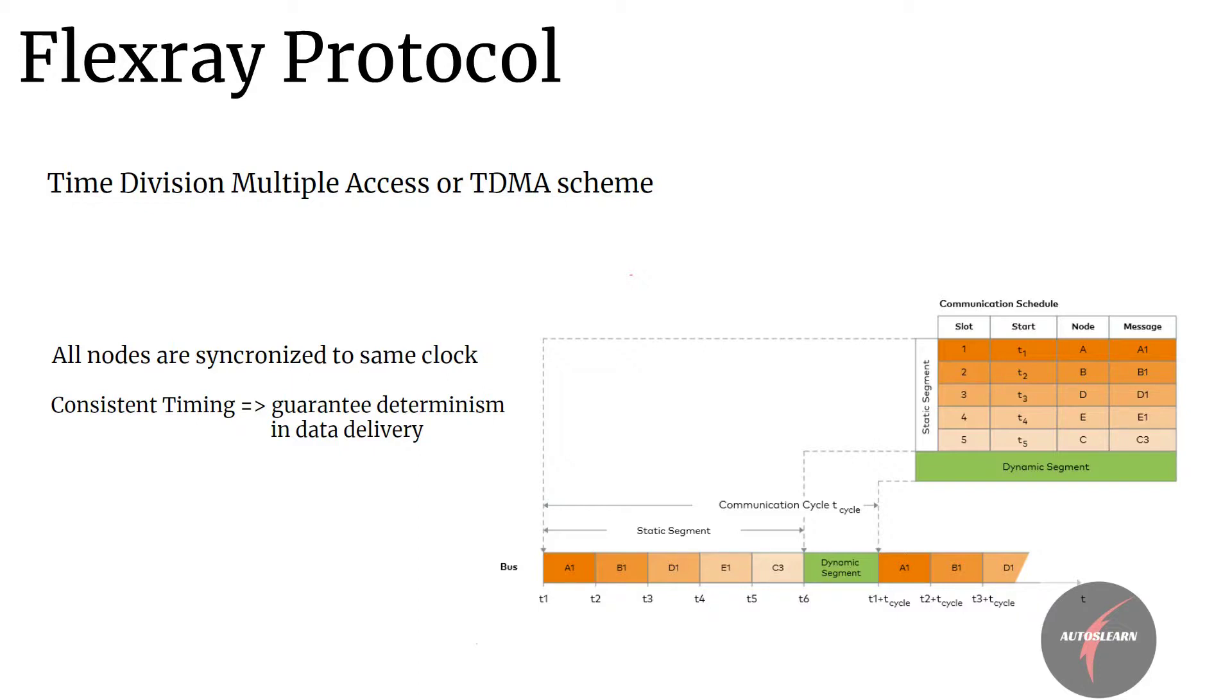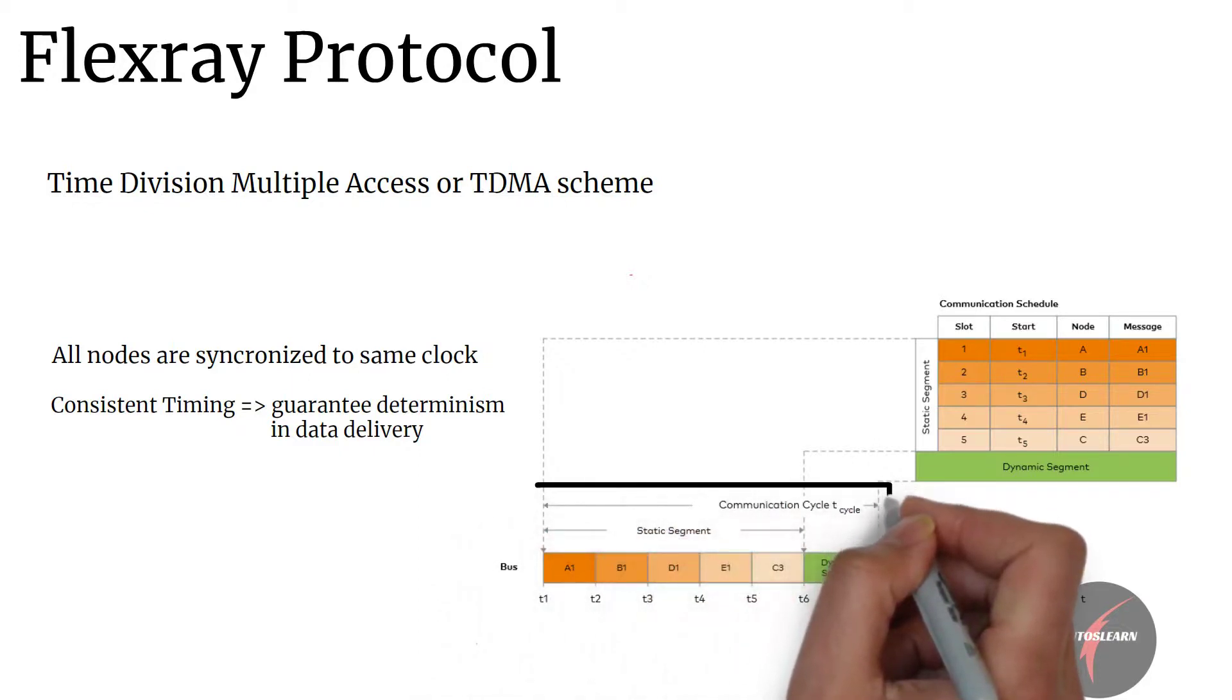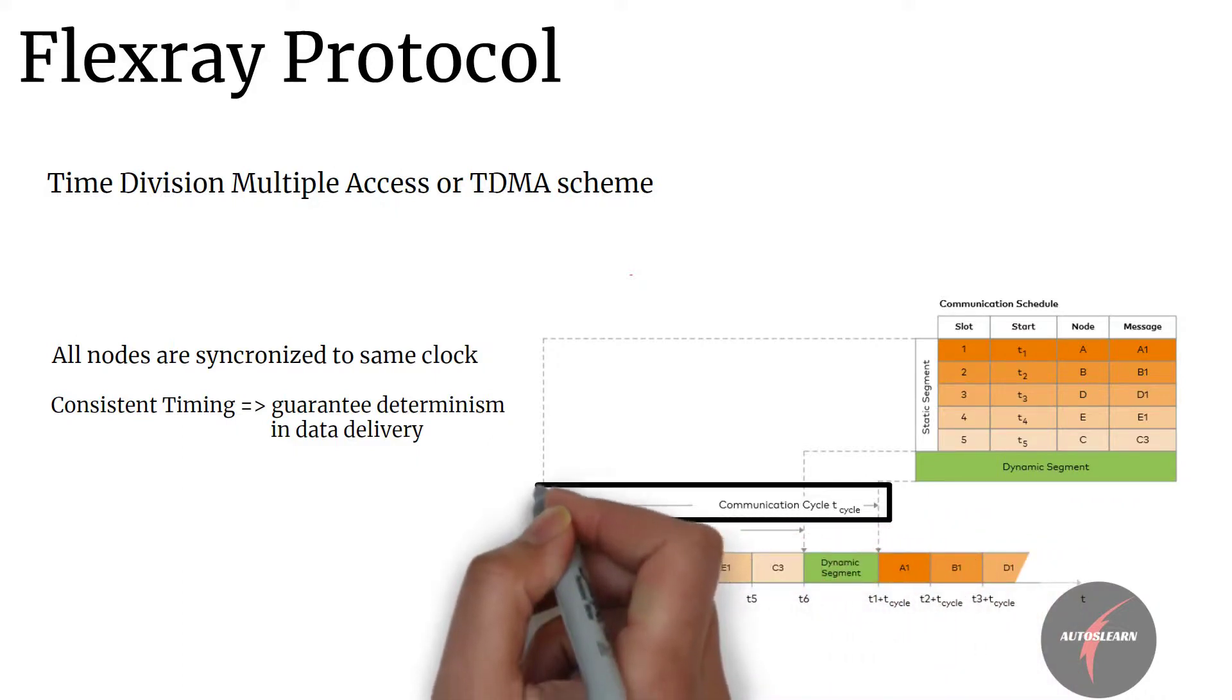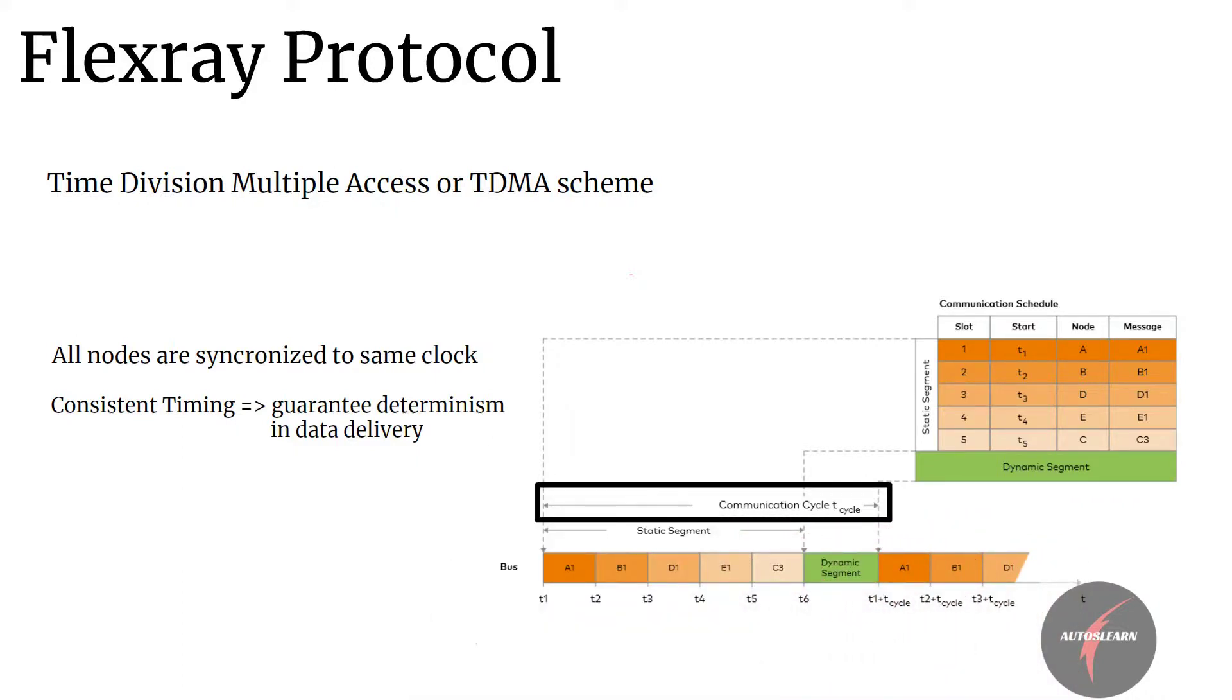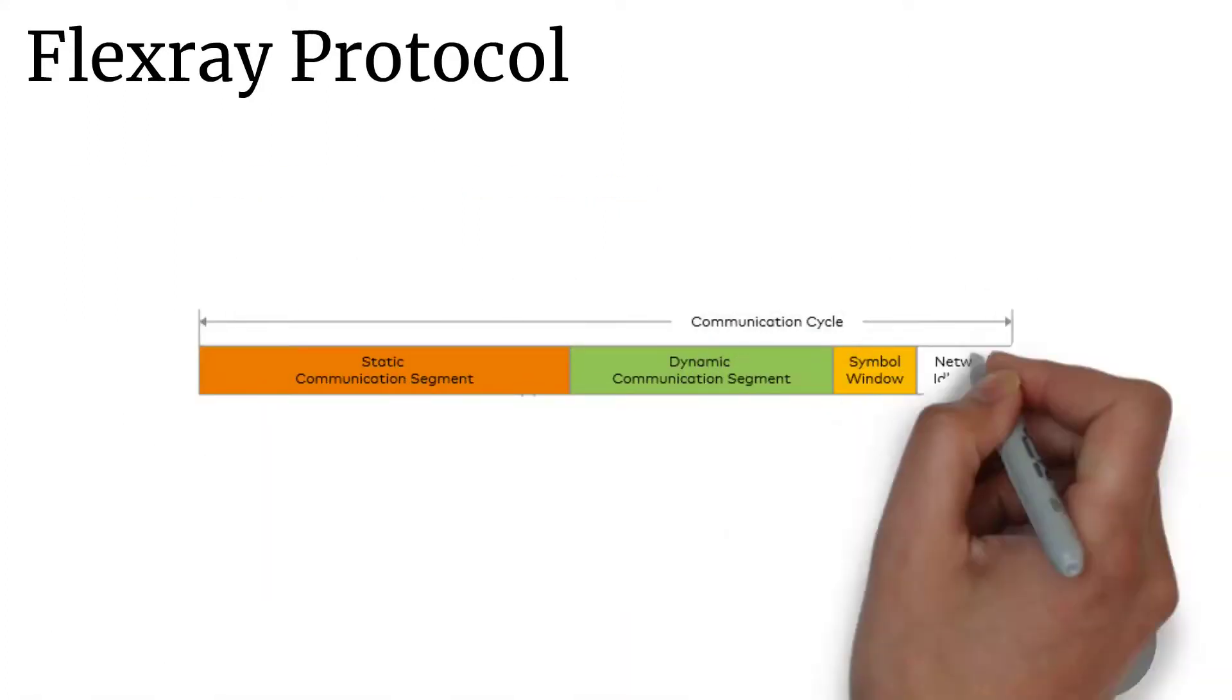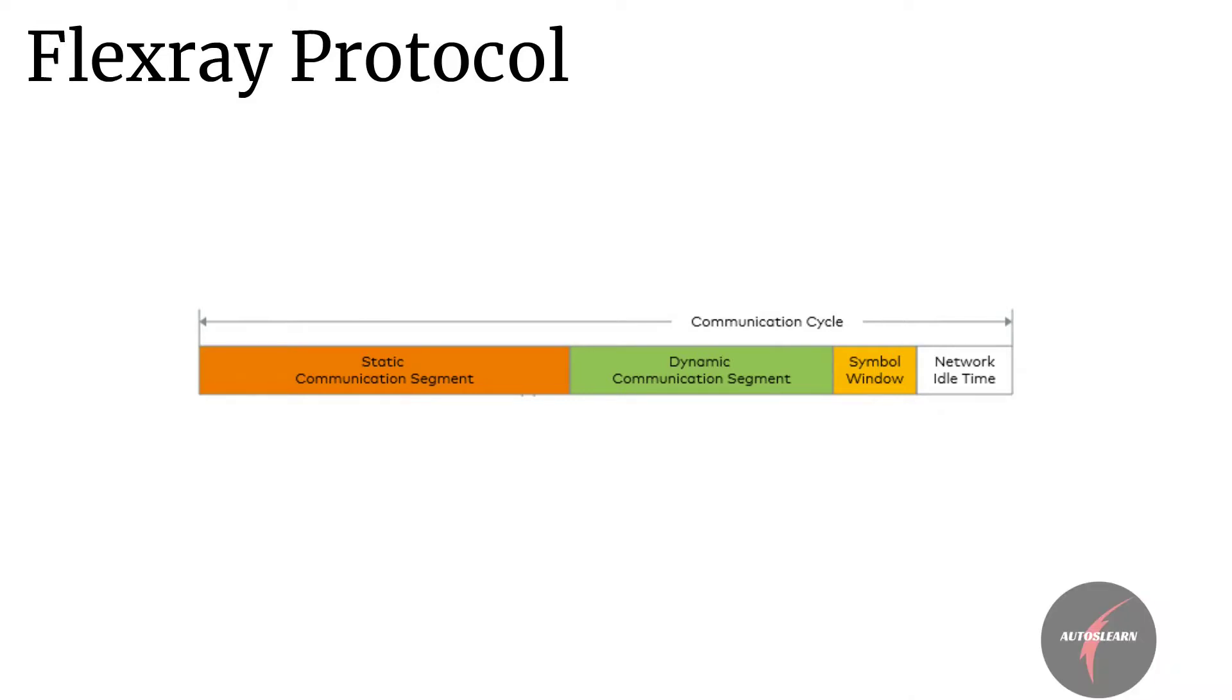FlexRay communication cycle is a fundamental element of the medium access scheme within FlexRay. The duration of the cycle is fixed when the network is designed, but it typically is around 1 to 5 milliseconds. So there are four main parts to the communication cycle. The static segment: this is the reserved slot for deterministic data that arrives at a fixed period.